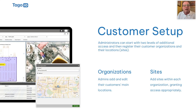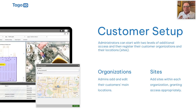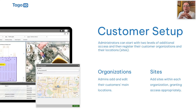For customer setup, administrators can start with two levels of additional access and register customers, organizations, and locations or sites. Admins can edit customers' main locations and sites, and grant access appropriately. For example, if I'm a restaurant owner with five locations, I'd create one organization for the chain and then sites underneath, where each manager only has access to interact with their own site based on the permissions provided.